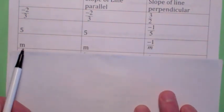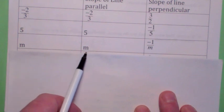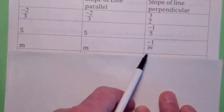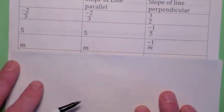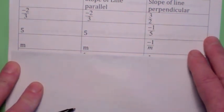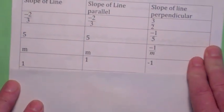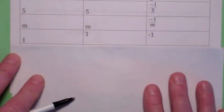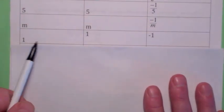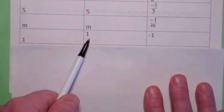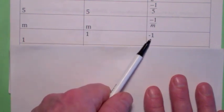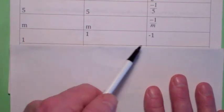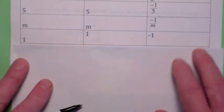In general, if the slope of the line is m, the slope of the parallel line will be m, and the slope of the perpendicular line will be negative 1 over m (assuming m isn't 0). For example, if the slope is 1, the parallel slope is 1, and the perpendicular slope is negative 1 over 1, which is just negative 1.